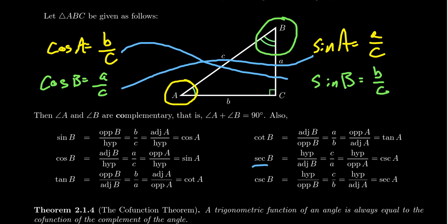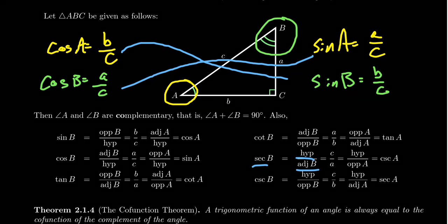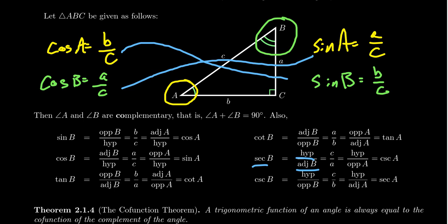Secant of B equals cosecant of A. Secant takes the hypotenuse divided by the adjacent side relative to B: the hypotenuse is C and the adjacent side to angle B is side A, giving C over A. Cosecant of A takes hypotenuse divided by the opposite side; relative to angle A the opposite side is little a, also giving C over A — the same ratio. So whenever you switch from an angle to its complement, you switch the trig function to its complement as well.